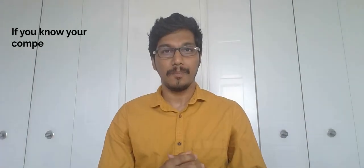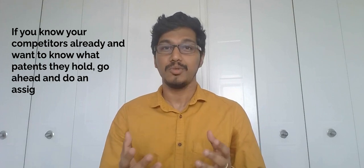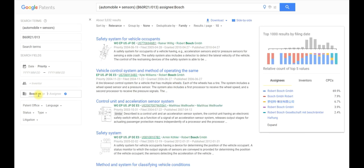If you know your competitors already and want to know what patents they hold, go ahead and do an assignee search. Put your competitor's name in the search bar and the tool will display the patents your competitors have. As an example, let us look at the patents filed by Bosch in the field of automobile safety systems. As you can see, the results now include Bosch patents that disclose passenger protection systems in automotive applications.